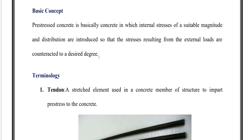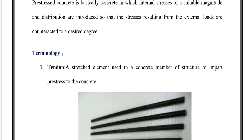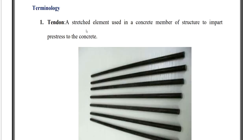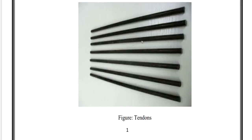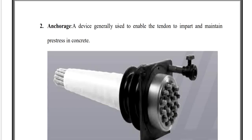Now let us look at the terminologies we are going to use. The first one is tendons — a stretched element used in a concrete member or structure to impart stresses to the concrete. Tendons may be used in bundles. They are elements used in concrete members to impart the pre-stresses in the beginning.